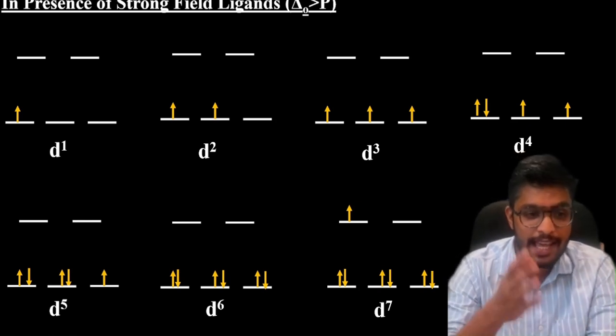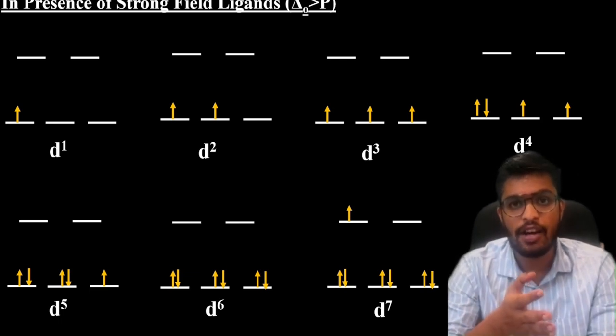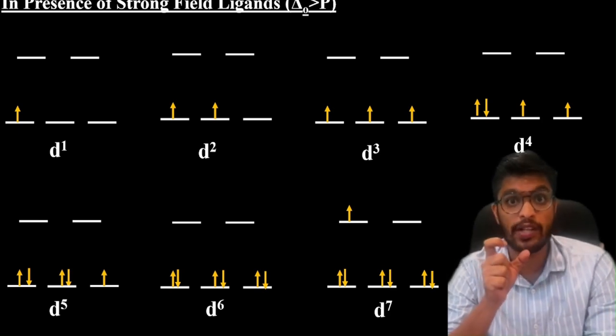If it's strong field, d7 again has EG orbitals arranged asymmetrically, so there is a strong Jahn-Teller effect.